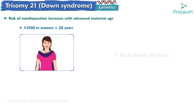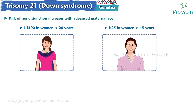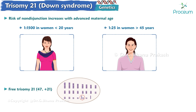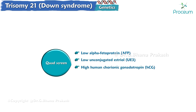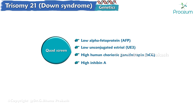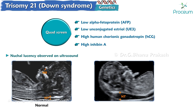The risk of non-disjunction rises from 1 in 1500 in women younger than 20 years to 1 in 25 in women older than 45 years. Most individuals with Down syndrome have free trisomy 21 (47, +21). In patients with Down syndrome, a quad screen shows low alpha-fetoprotein, low unconjugated estriol, high human chorionic gonadotropin, and high inhibin A. Additionally, nuchal lucency is observed on ultrasound.